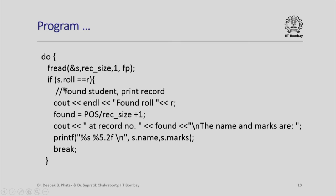If it is, then I have found the student, I will print the record. It is found at position divided by rec_size plus 1, so this is the record number. I output the message that the record is found at this record number and I print the name and marks of that student and I have finished. I need to get out of this do-while loop. In case I find a record where the roll number matches, I simply print that information out.